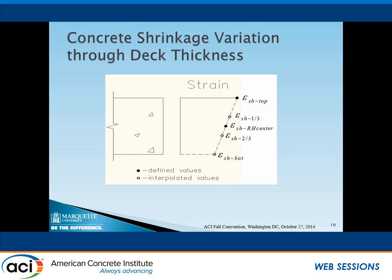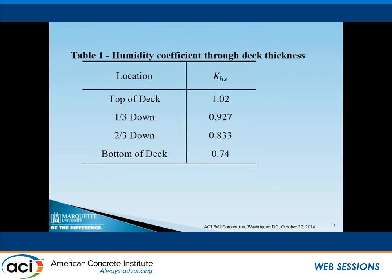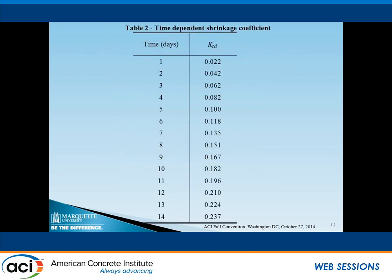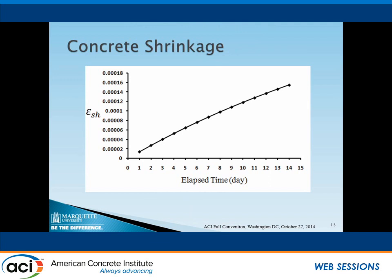For this bridge deck, we used three layers of elements to model it. Therefore, we needed the parameter values at third-point locations for the shrinkage relative humidity effect. The KHS values at different locations from top to bottom of the deck are shown in a table. The KTD changes with the number of days. Inputting all parameters into the AASHTO equation, we can find the shrinkage from day one to day 14, as shown in this diagram.